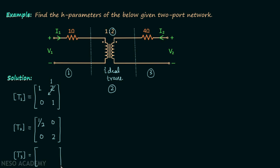The T parameters matrix of the third network connected in cascade is T3 = [1, 4; 0, 1].